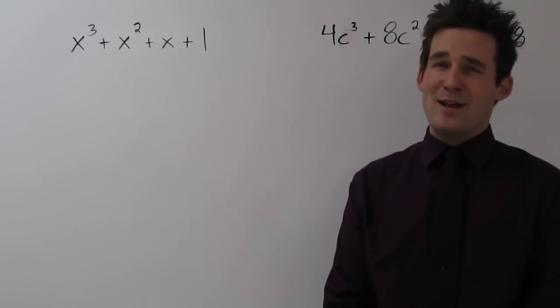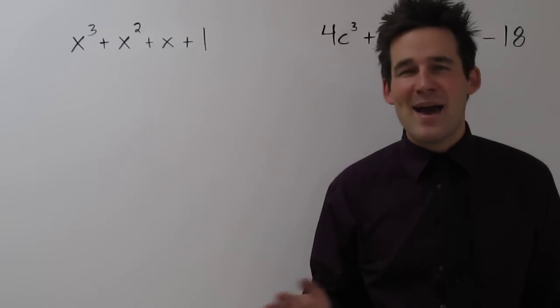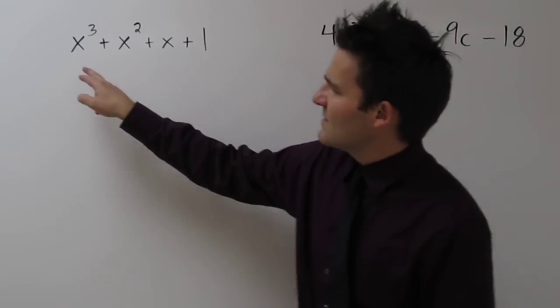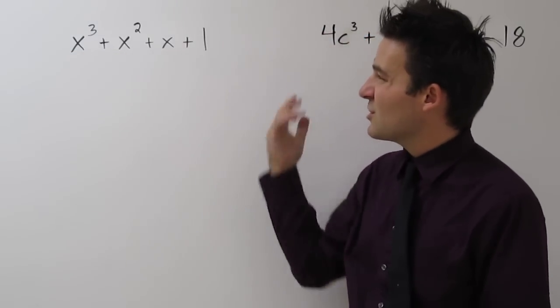It's a little hard to explain without doing an example. So let's look at this. Anytime you factor, you should automatically start looking for monomials you can factor out. And it doesn't look like, other than one of course, we can factor anything out of each of these terms.